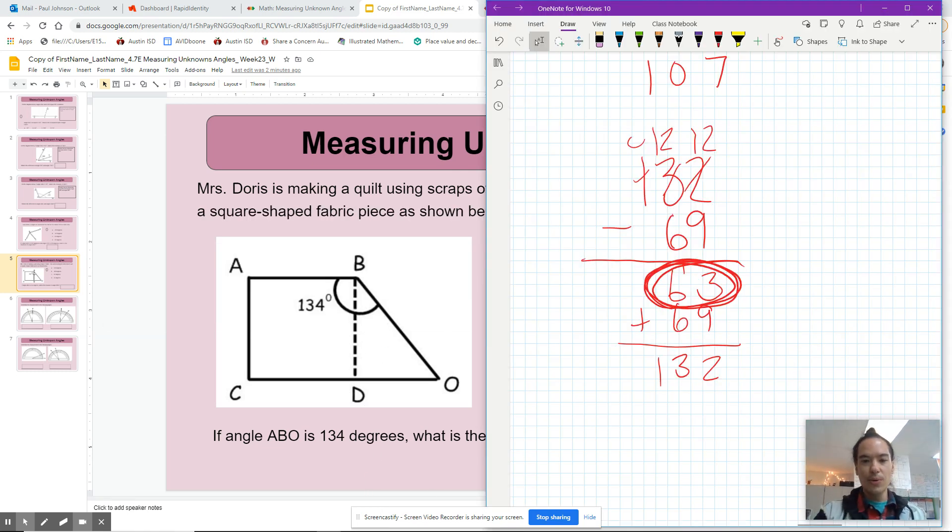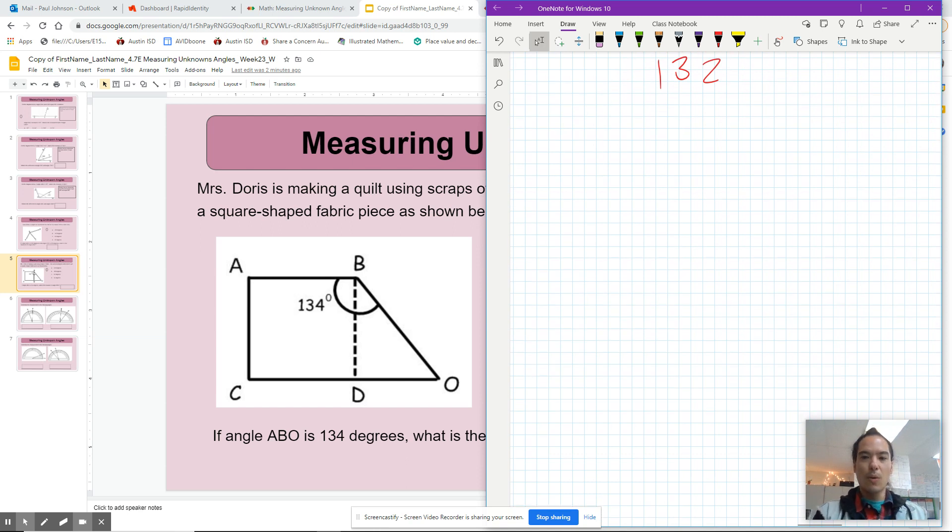So what we're going to do here, we're going to take our total, our whole, of 134 degrees, and we're going to subtract that 90-degree angle. And we know it's 90 degrees because that's the corner of a square. So 134 minus 90. Borrow, make that a 13, the difference is 4.